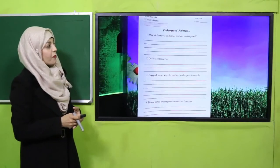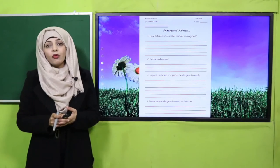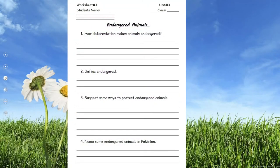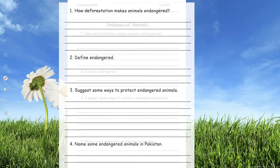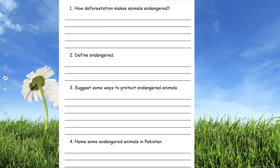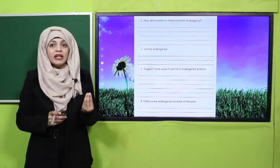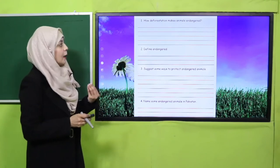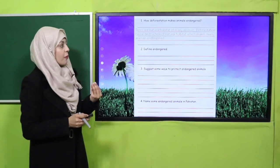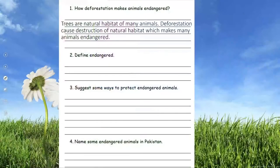Now is the time for practice. You can simply download worksheet number 4 from the description box below this video, or get it in print form from your teacher. Write your name and class at the top. Question: How does deforestation make animals endangered? Trees are the natural habitat of many animals. Deforestation causes destruction of natural habitat, which makes many animals endangered.